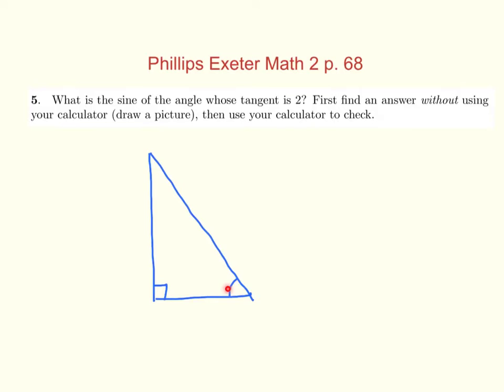I wanted that tangent to be 2. So if the tangent is 2, I'll call this angle x. The tangent of x equals 2. What do we know about tangent?